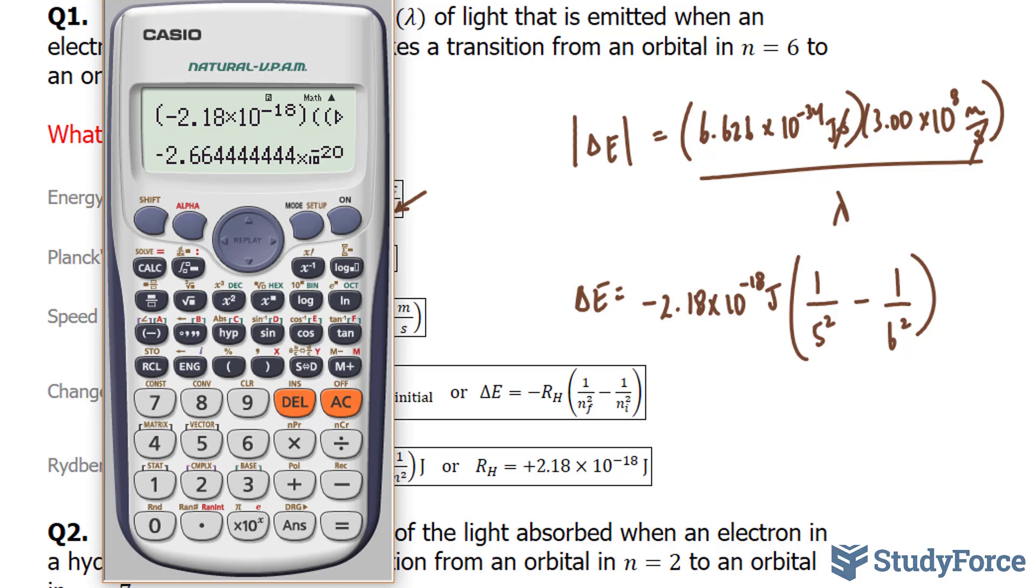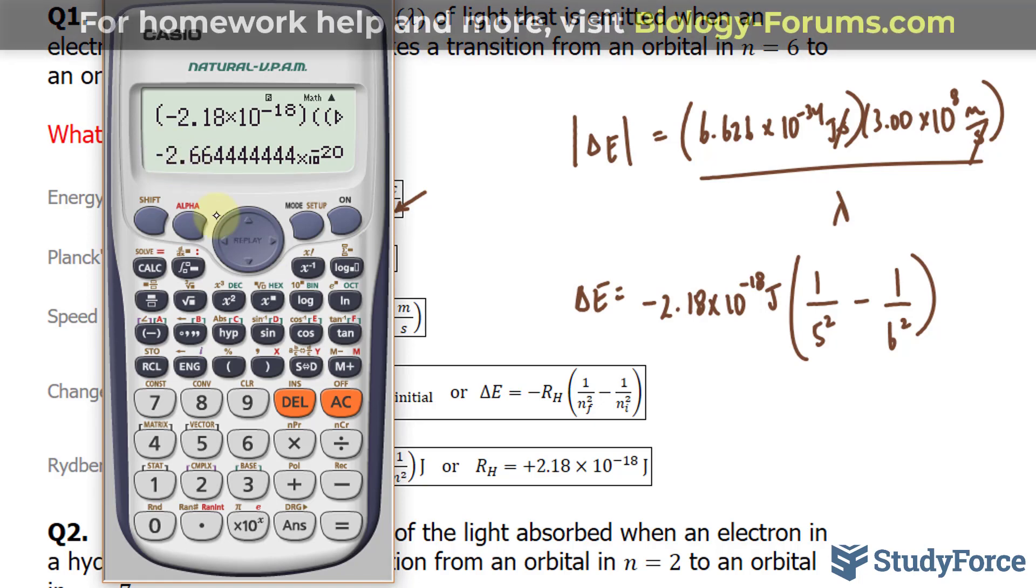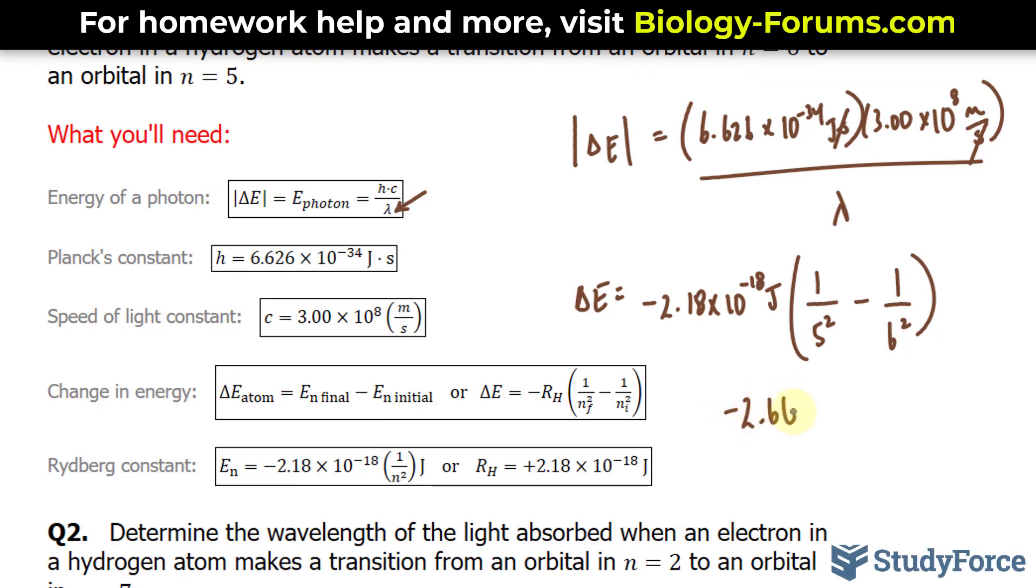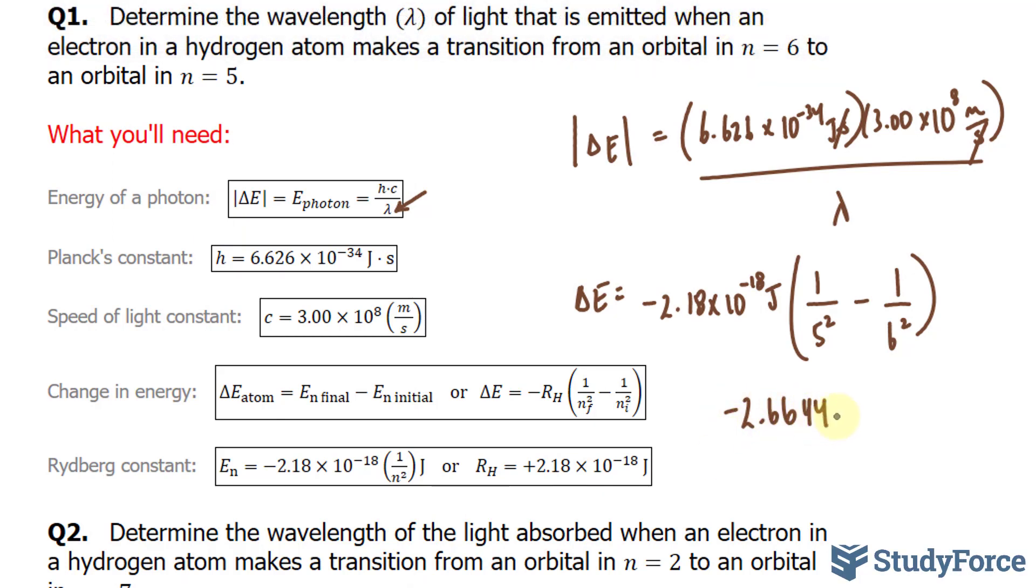Now this needs to be to three significant figures, but I'll write beyond three significant figures and just make mental note of where I stopped. So I'll write down negative 2.664 times 10 to the power of negative 20. And this is in joules. As I mentioned, this needs to be to three significant figures. So I'll put a dot underneath the 6 just to remember what amount of numbers I should have.